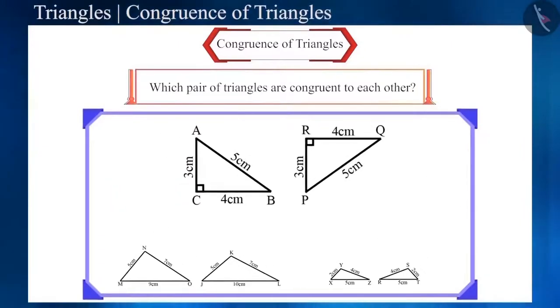If you notice the first pair, the sides of the triangle are 3, 4 and 5 cm. The only difference is that the second triangle is rotated. If the corresponding sides of the triangle are equal, then the triangles will be congruent.